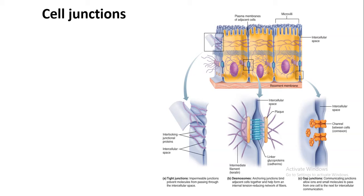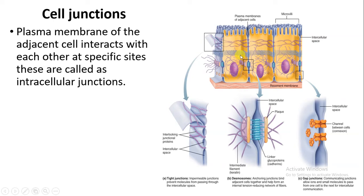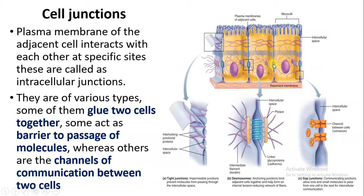Hello students, welcome. I am Jyothi Rajput and today we are going to talk about cell junctions. As you can see in the diagram, these are the cells with plasma membranes. The plasma membranes of adjacent cells interact with each other at particular sites called junctions. These junctions help cells remain close to each other, play an important role in the passage of molecules between cells, and some act as barriers preventing the transfer of ions or molecules.